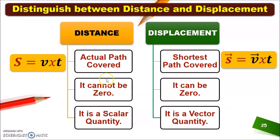Now this is the tabular form to distinguish between distance and displacement. Distance is the actual path covered; it cannot be zero, and it is a scalar quantity. Displacement is the shortest path covered; it can be zero because if the initial and final points are the same, the displacement will be zero automatically. And it is a vector quantity.